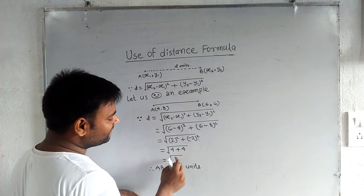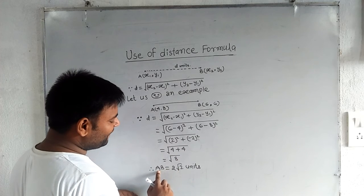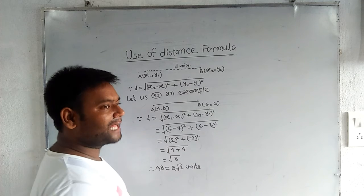And then we get AB is equal to 2 root 2 units. Thank you for watching.